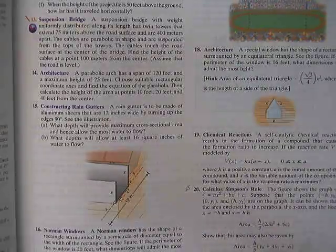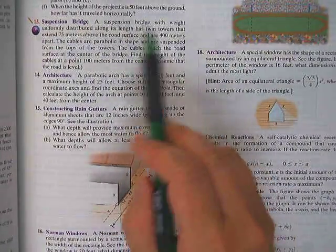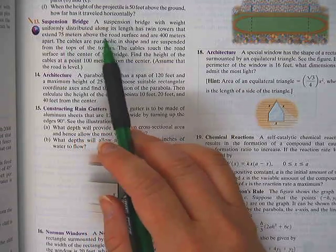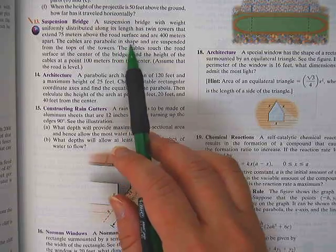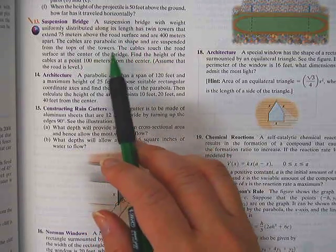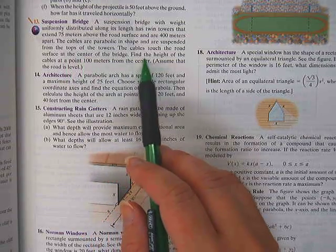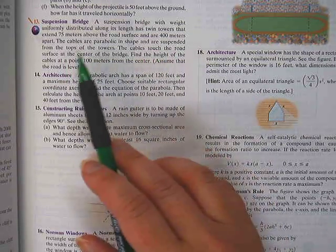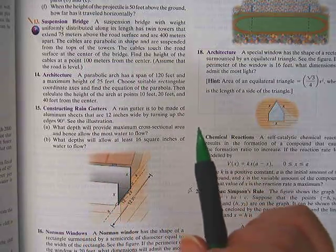Number 13: a suspension bridge with weight uniformly distributed along its length has twin towers that extend 75 meters above the road surface and are 400 meters apart. The cables are parabolic in shape and are suspended from the tops of the towers. The cables touch the road surface at the center of the bridge. Find the height of the cables at a point 100 meters from the center. Assume the road is level.